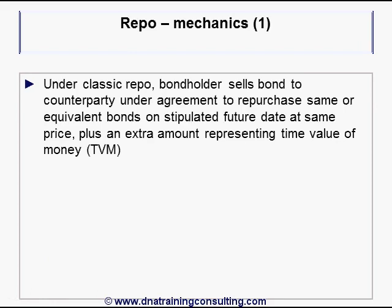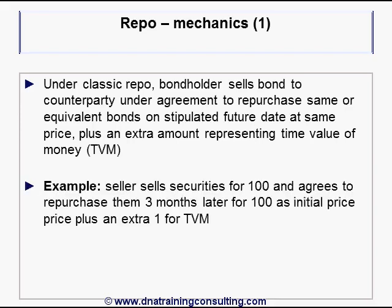Under a classic repo, a bondholder sells a bond to a counterparty under an agreement to repurchase the same or equivalent bonds on a stipulated future date, usually at the same price plus an extra amount representing the time value of money. In the simplest example, the seller sells the securities for 100 and agrees to repurchase them three months later for 100 plus an extra 1 for time value of money.